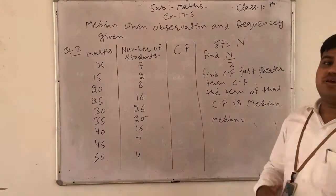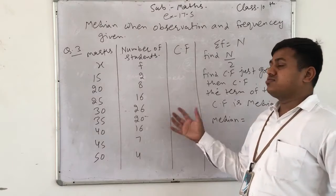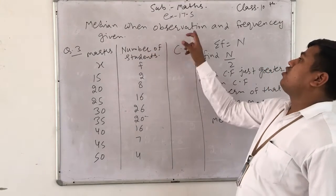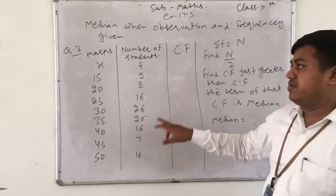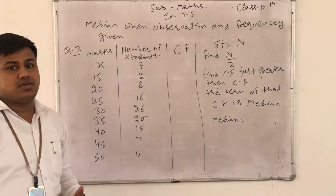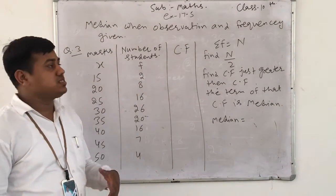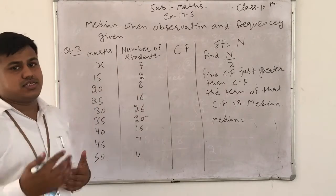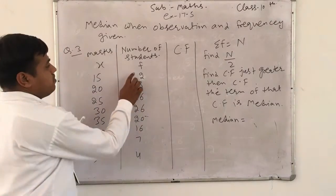So how we will find median for that type of question when observation and frequency are given? Firstly, find CF, which stands for cumulative frequency. We know that the word cumulative means just adding digit and previous also.